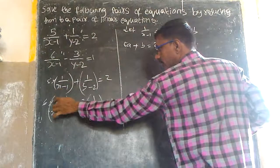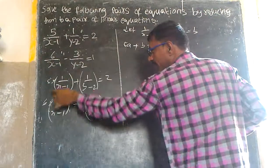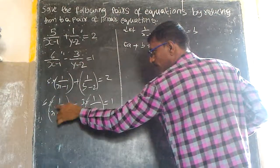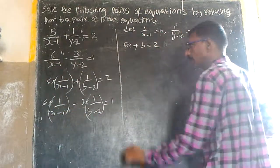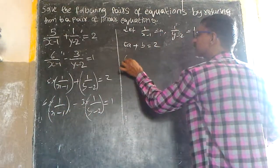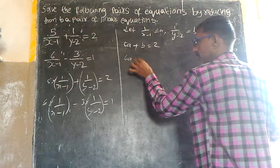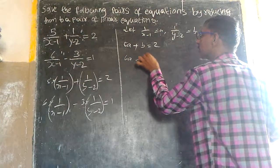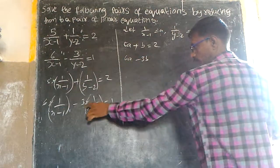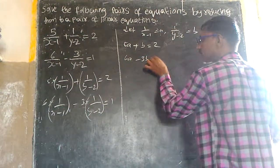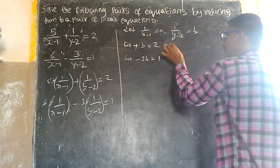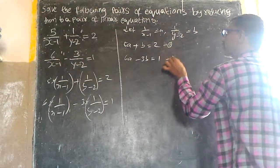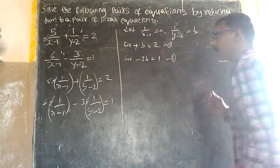Similarly, the second equation: 6 into 1 by (x minus 1) minus 3 into 1 by (y minus 2) is equal to 1, which reduces to 6a minus 3b is equal to 1.